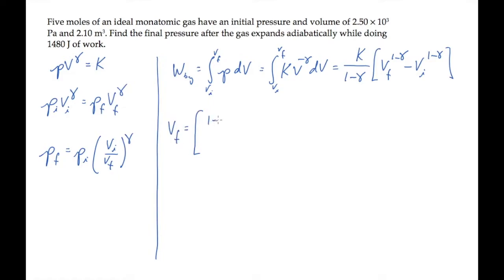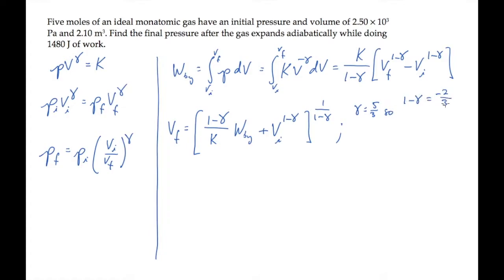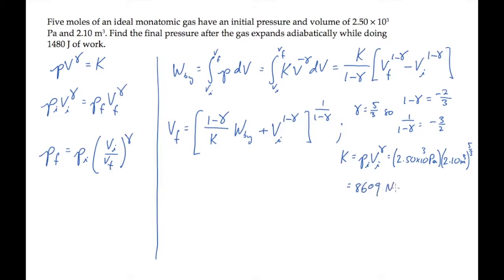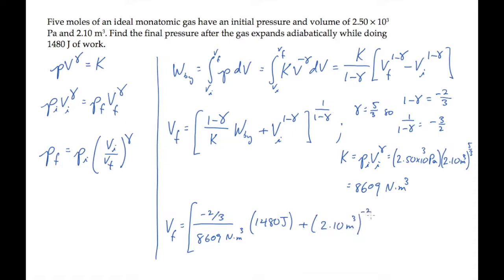Solve that expression for the final volume V sub f. We know all of the values on the right hand side. Gamma, the adiabatic constant for a monatomic gas, is 5 thirds, so 1 minus gamma is negative 2 thirds, and 1 over that is minus 3 halves. The constant K is PV to the gamma, calculated at the initial state, which equals 86.09 N·m³. Substituting all of these values into the expression for the final volume gives 2.8697 cubic meters.